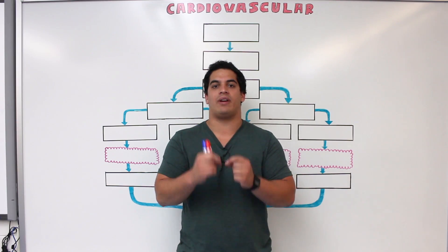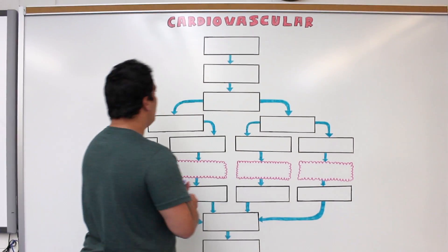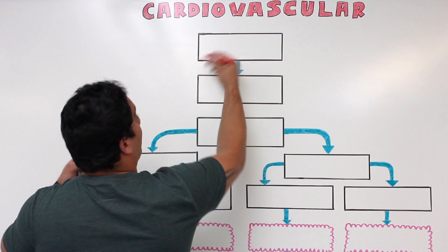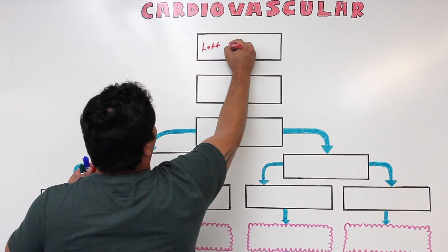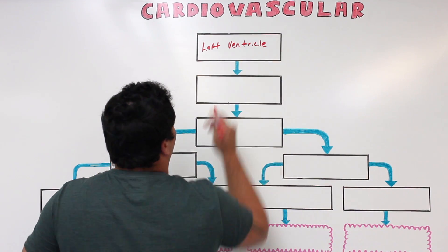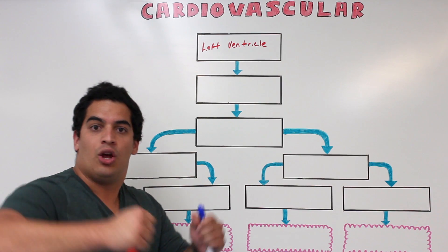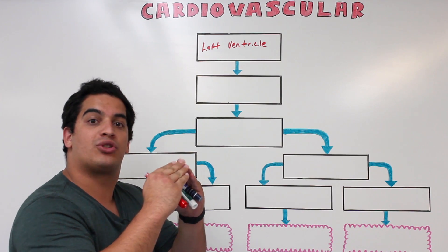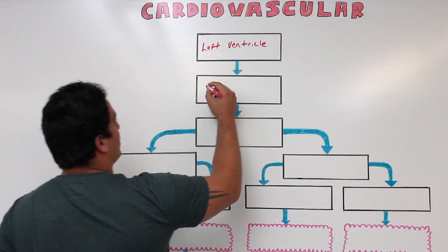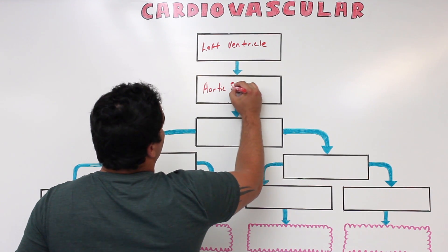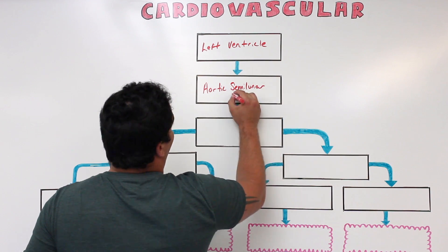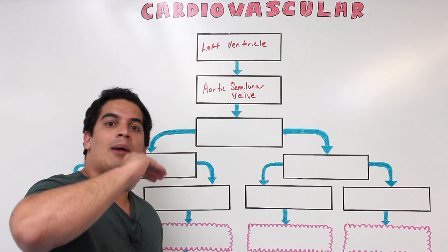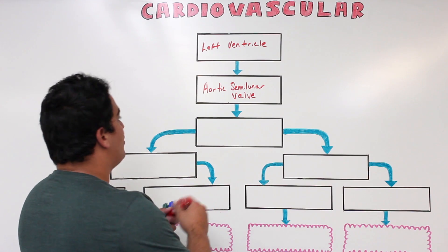The coronary circulation starts particularly in the left ventricle. The left ventricle is super important because it's the systemic pump and in this case the coronary pump. When the left ventricle pumps the blood out, it goes up through a very important structure called the aortic semilunar valve, and then it goes into the ascending aorta.